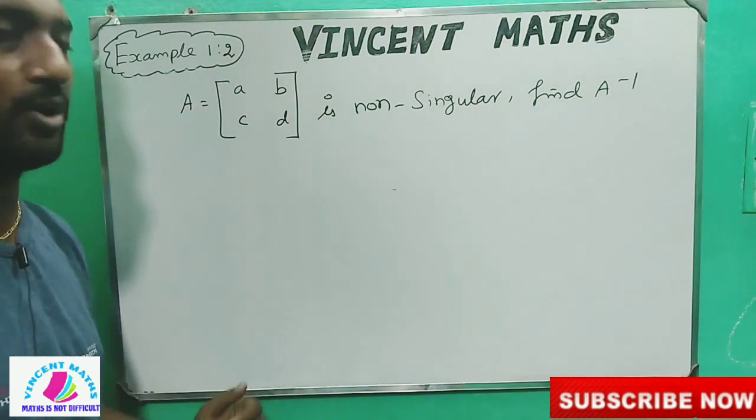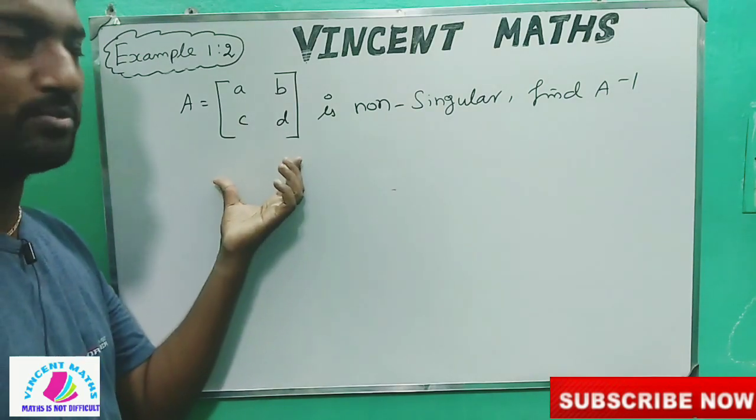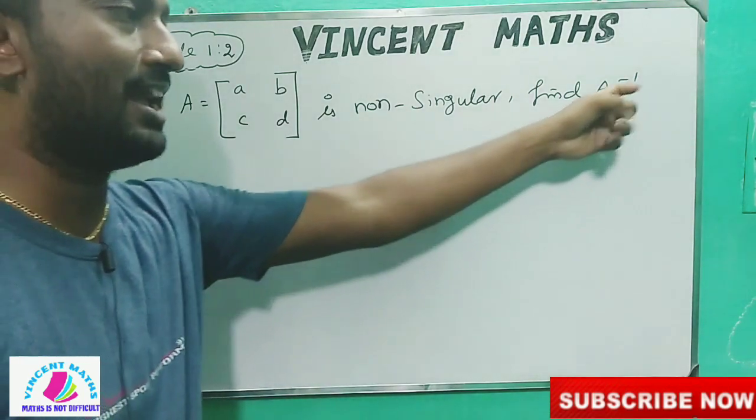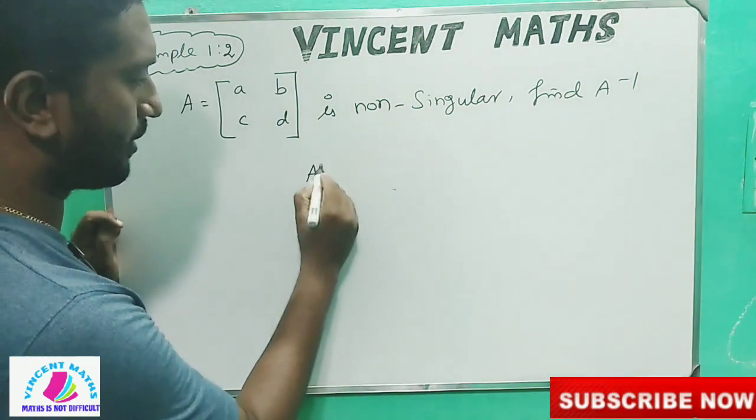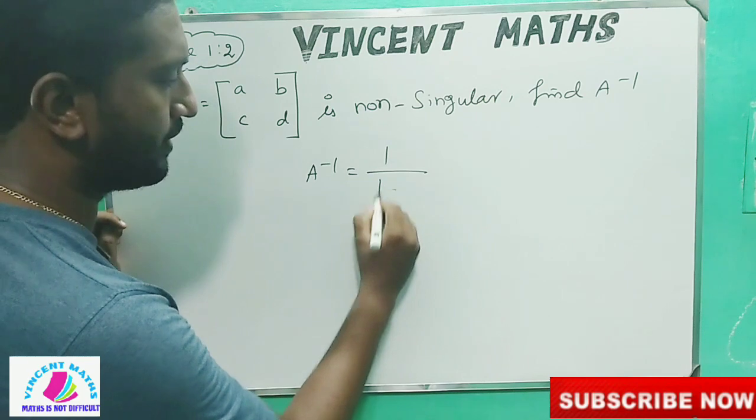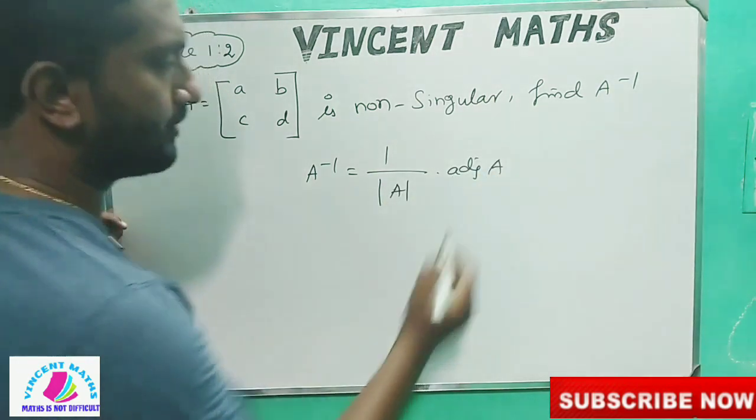If we do a formula, we can find a formula. What we have to do is a 2x2 matrix that is non-singular, find A inverse. We can find A inverse in a form. We know that A inverse is 1 by determinant of A into adjoint of A. This is the formula.